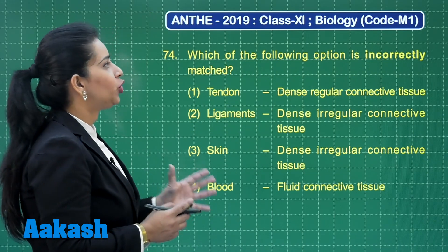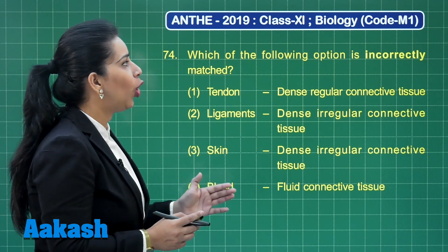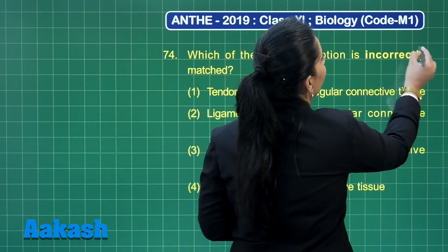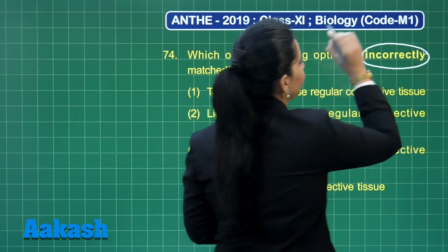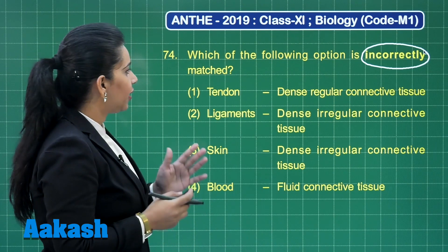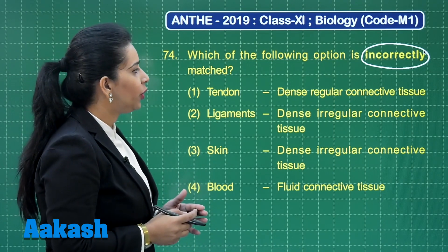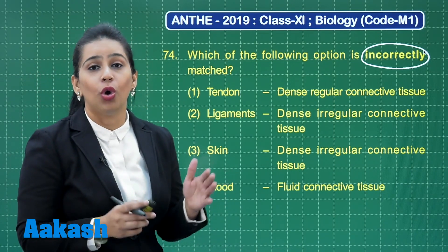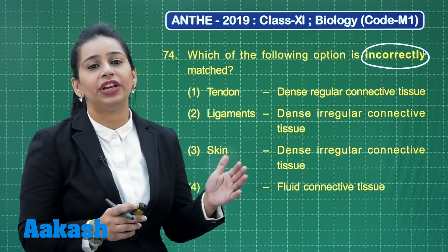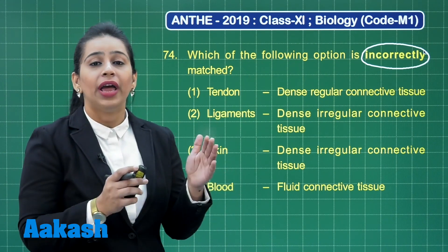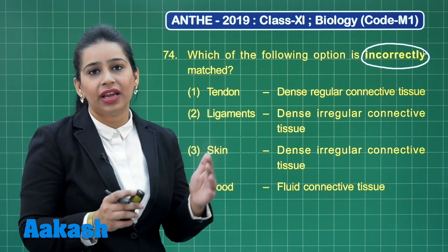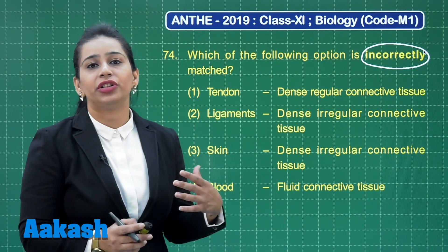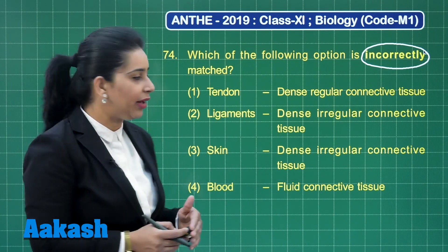The next question asks which of the following options is incorrectly matched. We need to find the incorrect match here. The first option is tendon, which is comprised of dense regular connective tissue. This is true — tendon is comprised of regular connective tissue where there is a particular orientation or pattern of the presence of fibers and cells in the matrix.